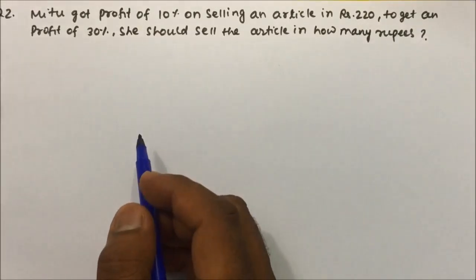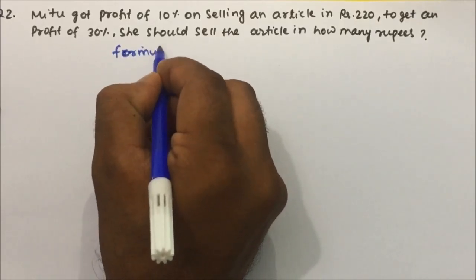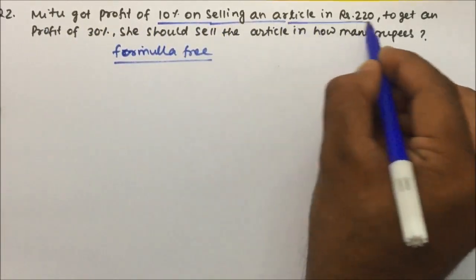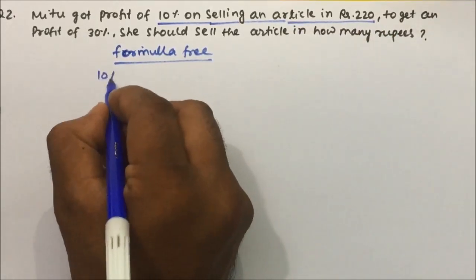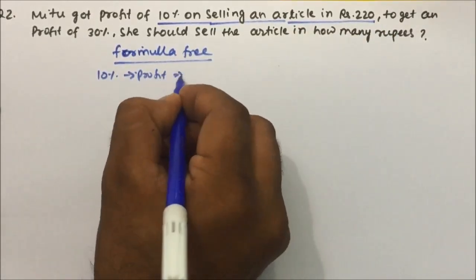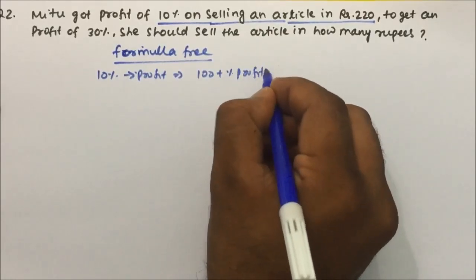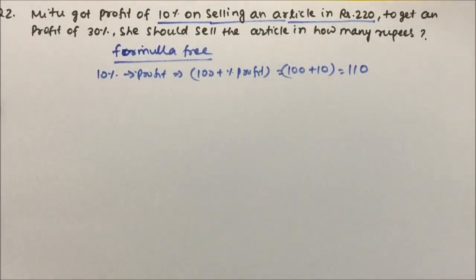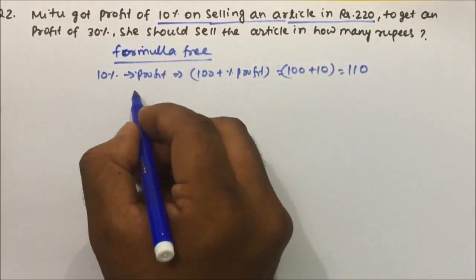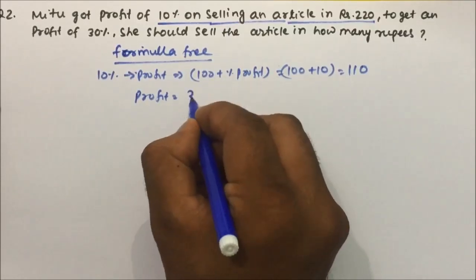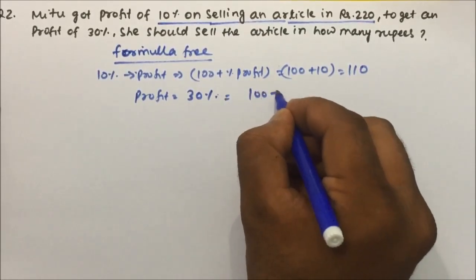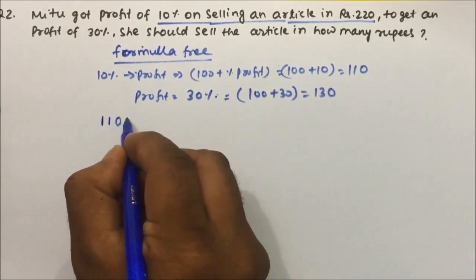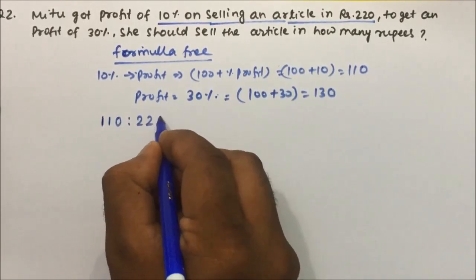Question number 2, using the formula-free approach. Meetu got a profit of 10% on selling an article for 220 rupees. 10% profit means 100 plus percentage of profit, so 100 plus 10 equals 110. On what price should he sell to get a profit of 30%? For 30% profit, we write 100 plus 30, which is 130. So when the profit percentage gives 110, the price is 220 rupees.